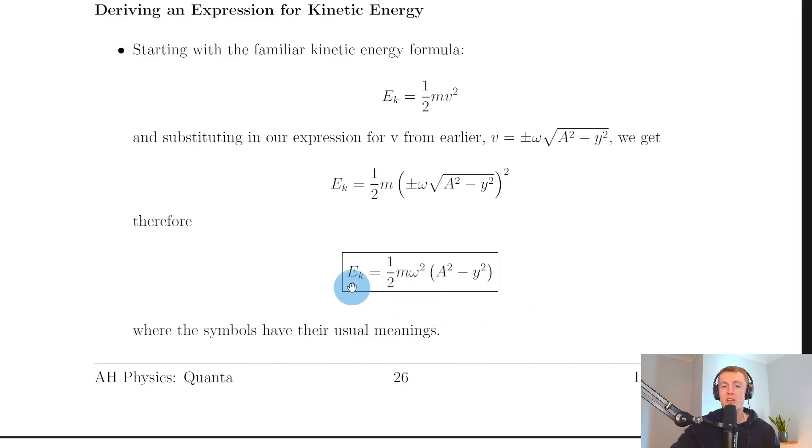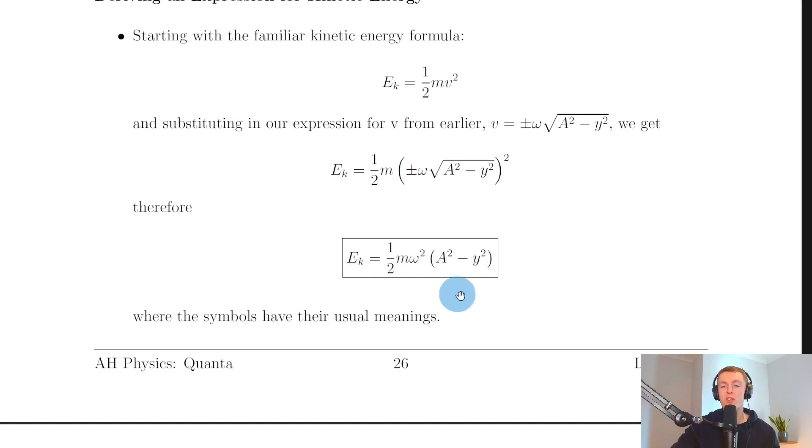Ek is kinetic energy in joules, m is mass in kilograms, ω is angular frequency in radians per second, A is amplitude in meters, and y is displacement in meters. You get this equation on the relationship sheet in the exam, but you need to be able to show the steps to derive it.